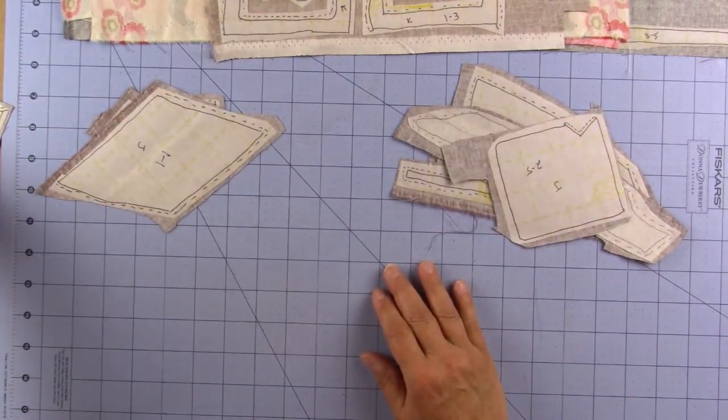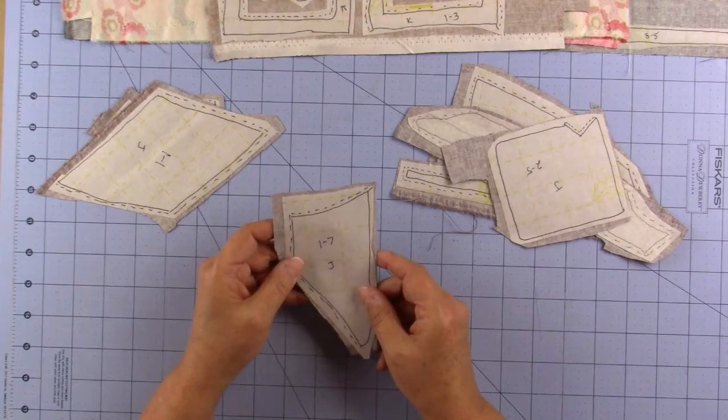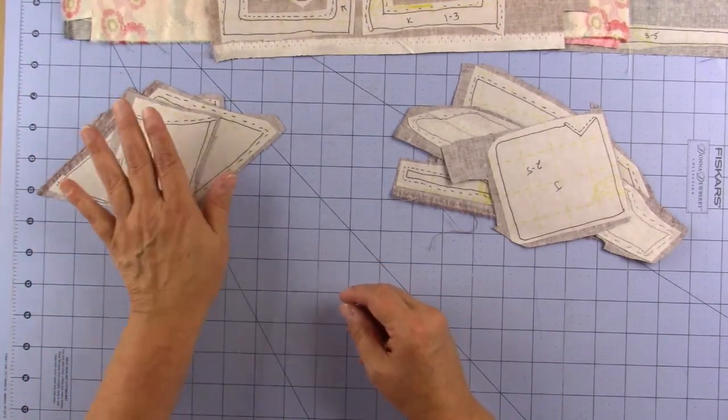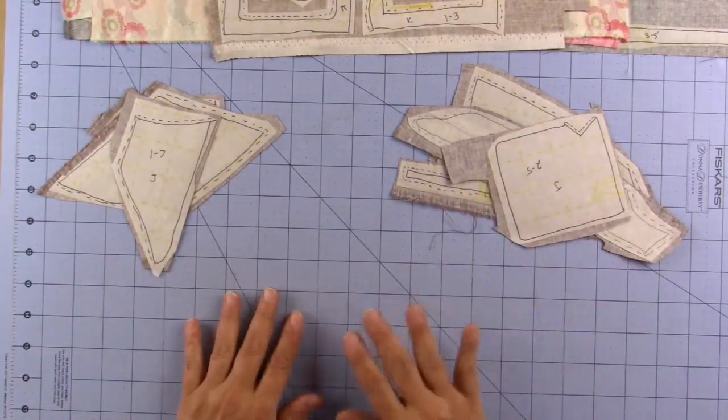Go through and do that with all of your different fabric pieces. So you'll have six stacks. Section 1, 2, 3, 4, 5, 6.